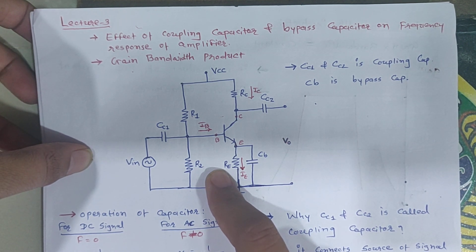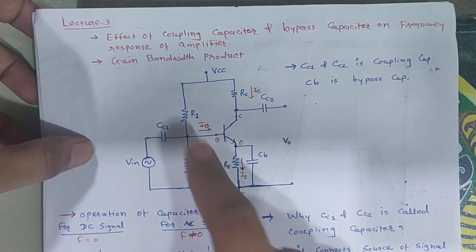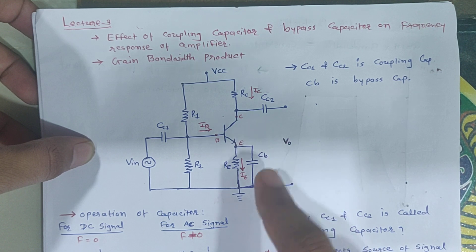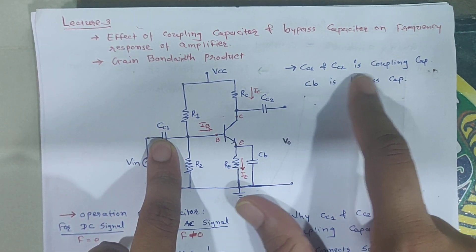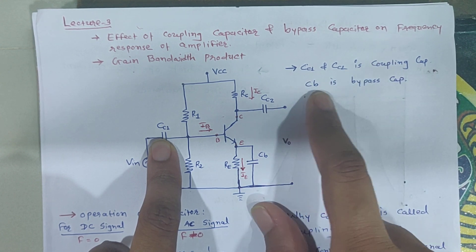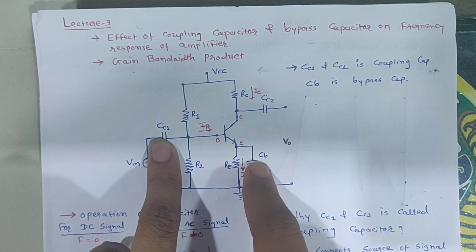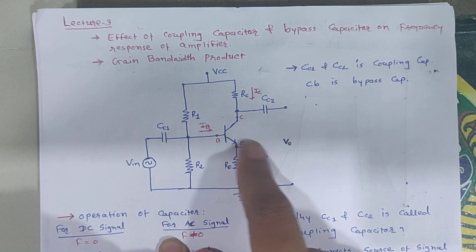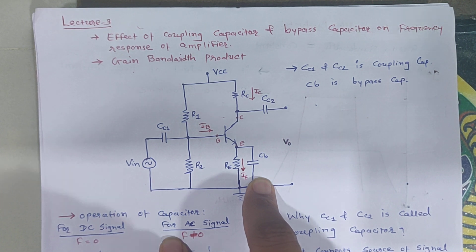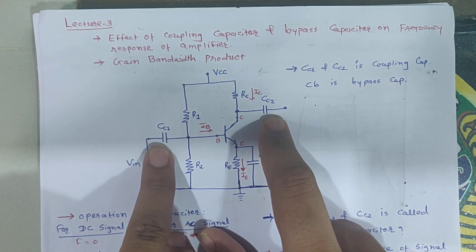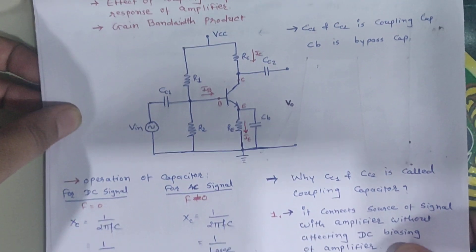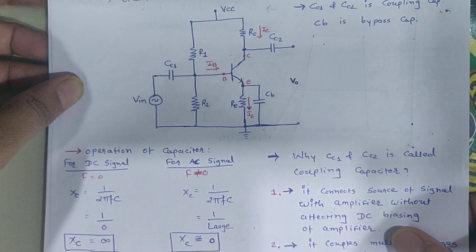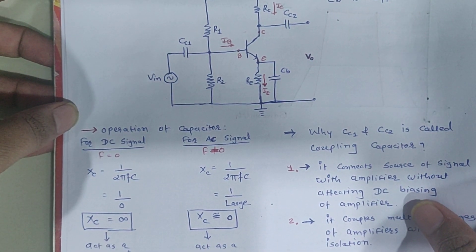We have drawn one amplifier circuit with voltage divider biasing. We have connected R1, R2, RC, and RE resistors. CC1 and CC2 are the coupling capacitors, and CB is the bypass capacitor connected across the RE resistor.